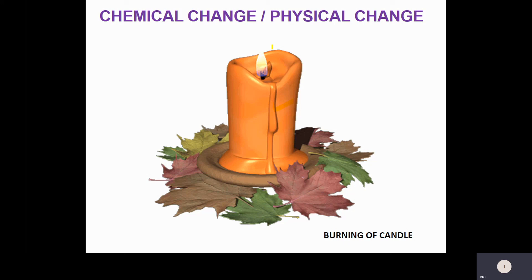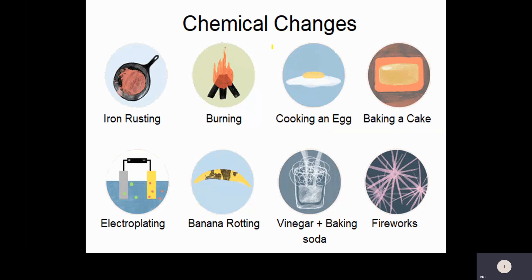This covers the third kind of changes: physical and chemical changes. Many examples of chemical changes exist — iron rusting, burning, cooking an egg, baking a cake, chemical reactions, and fireworks. They are all considered chemical changes because there is always a formation of a new substance.